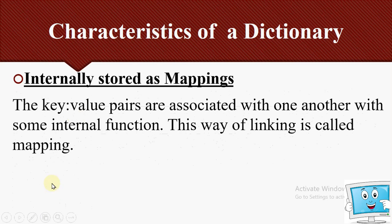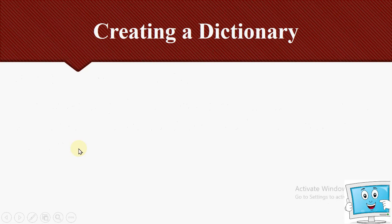The next characteristic is that dictionaries are internally stored as mapping. The key-value pairs are associated with one another through some internal function — they are linked together, and this way of linking is called mapping.